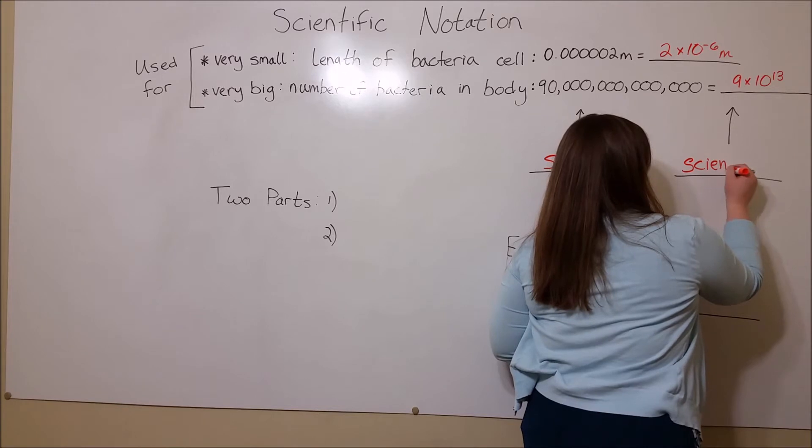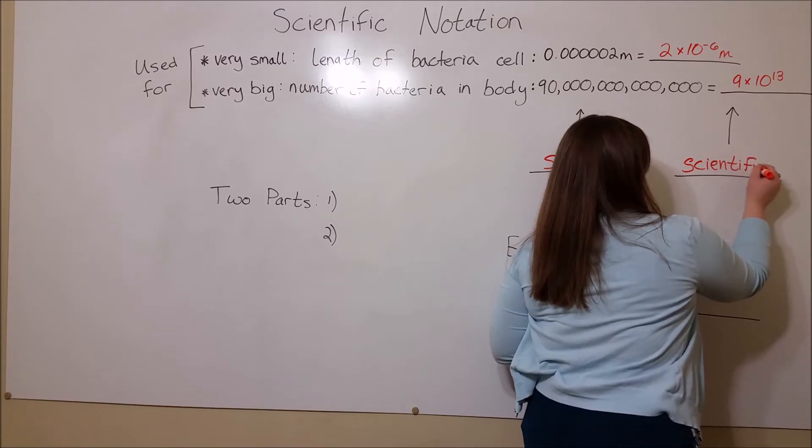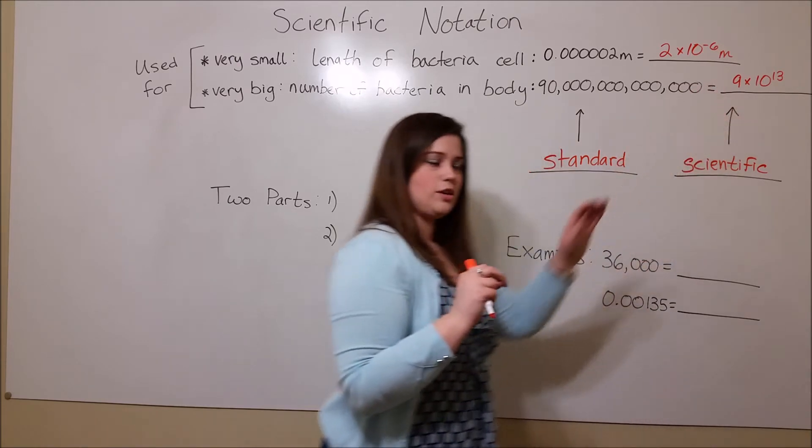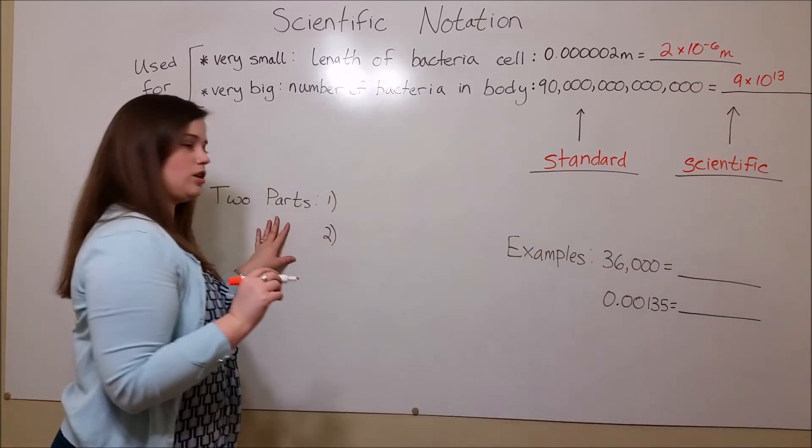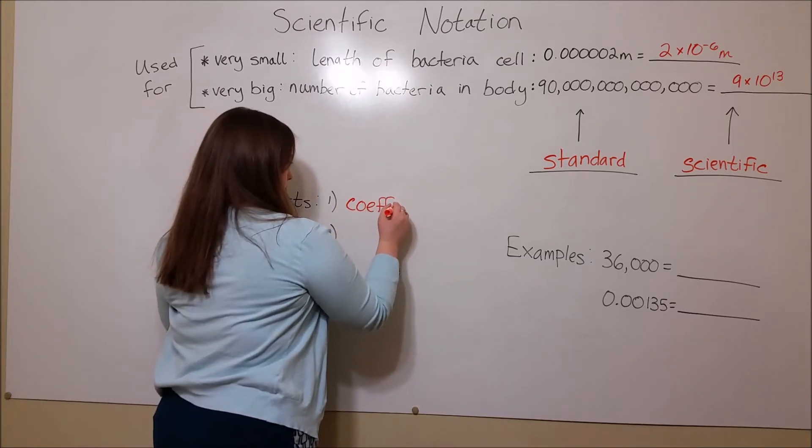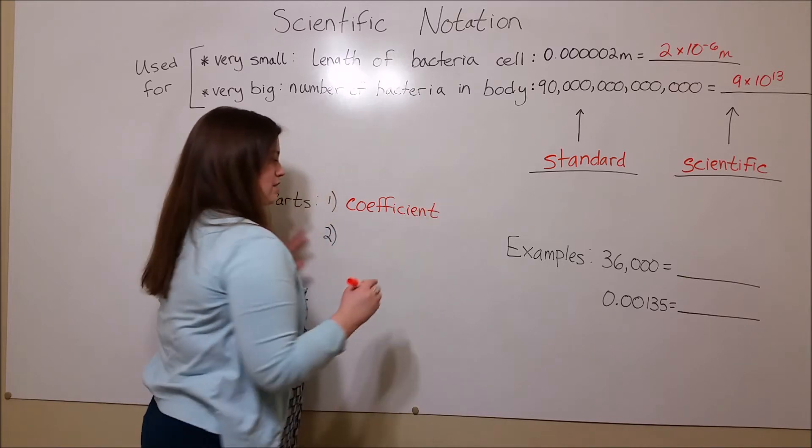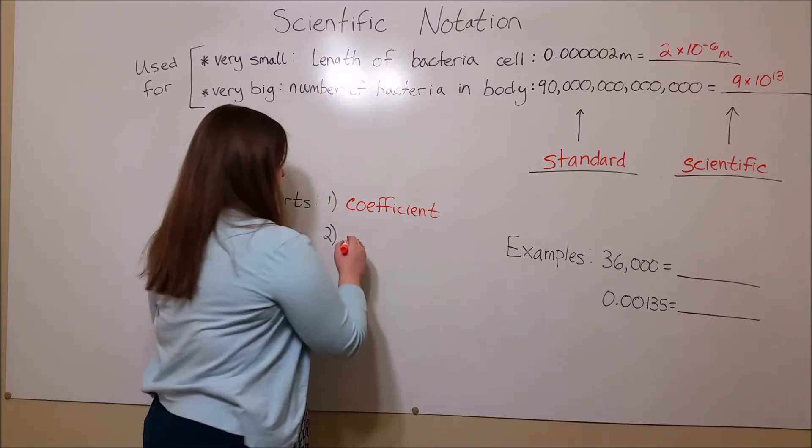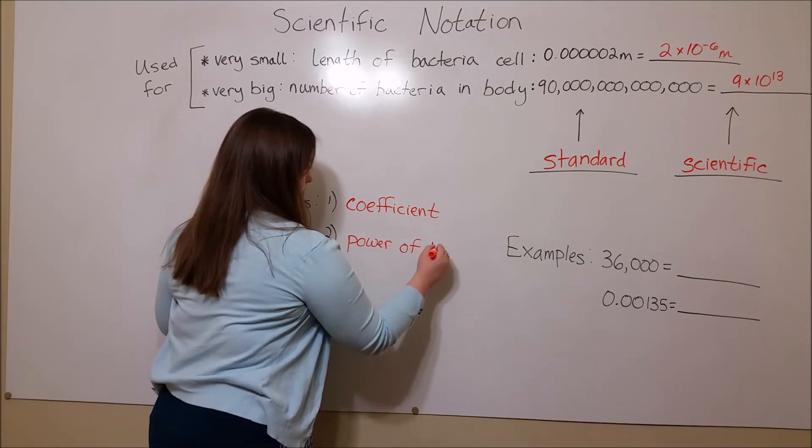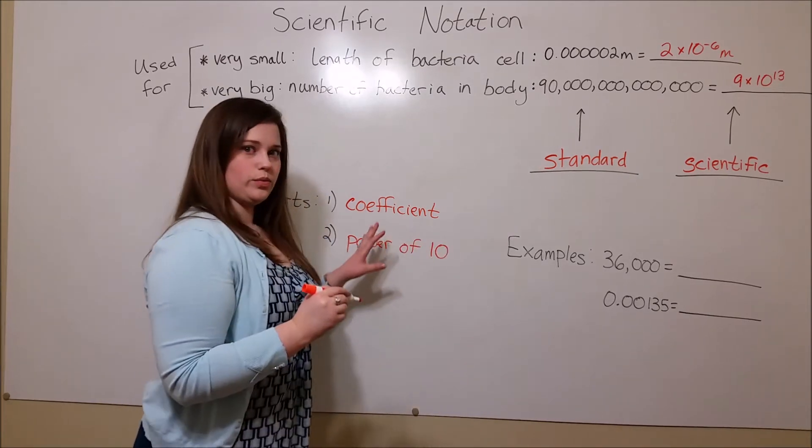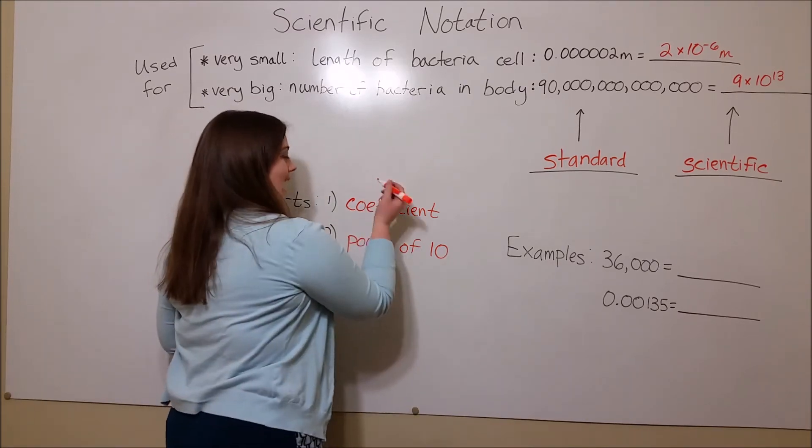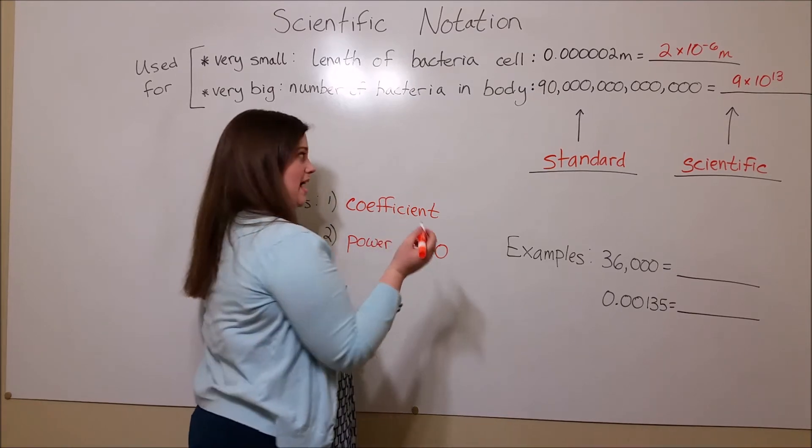by two parts. That is, every number in scientific notation has a part called the coefficient, and a part called the power of 10. Now a couple of rules for getting these correct. The coefficient is always at least one, but smaller than 10.